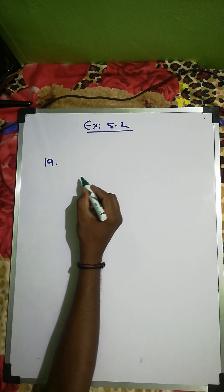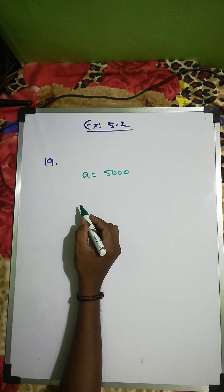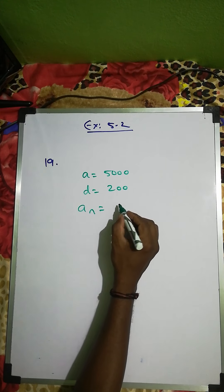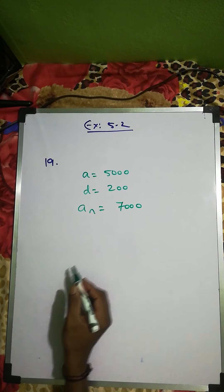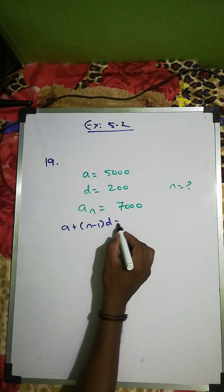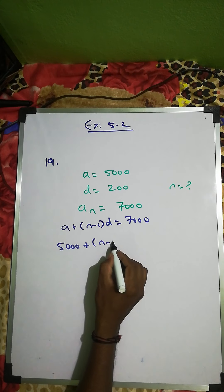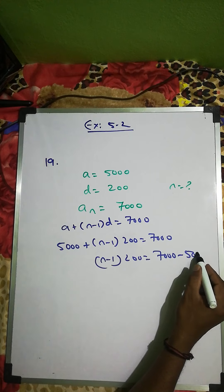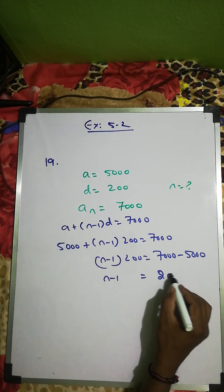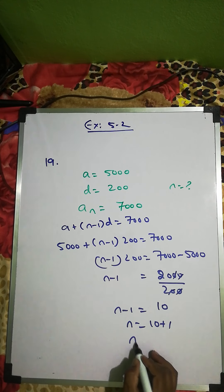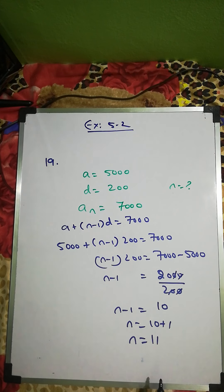Question number 19: a person started work in 1995 with an annual salary of 5000, so a = 5000, and receives an increment of 200 each year, so d = 200. We need to find n when the salary reaches 7000. Using an = a + (n-1)d: 5000 + (n-1)×200 = 7000, so (n-1) = 2000/200 = 10, giving n = 11. After the 11th year, the income will be 7000.